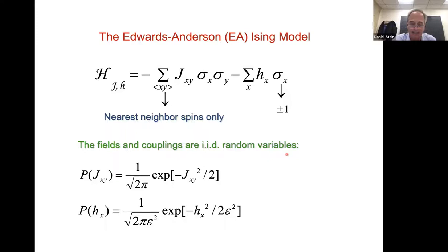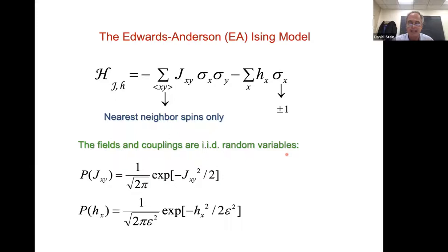Most theoretical studies now follow from a paper written in 1975 by Sam Edwards and Phil Anderson. Their basic point of view was that you can ignore all of the microscopic details. What really determines spin glass behavior is a competition between quenched ferromagnetic and anti-ferromagnetic interactions within the same system. So they proposed a simple-looking Hamiltonian, setting the magnetic field to zero to have a global spin flip symmetry in the problem.